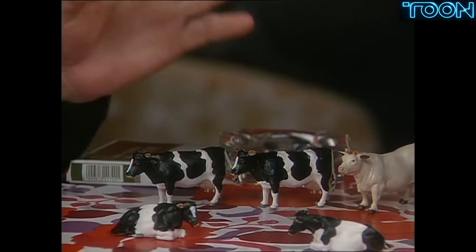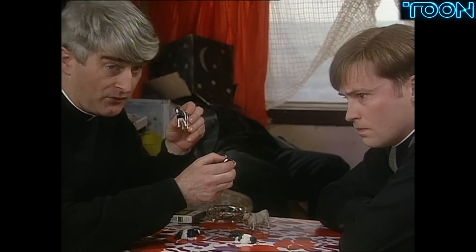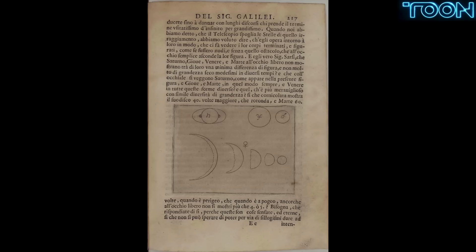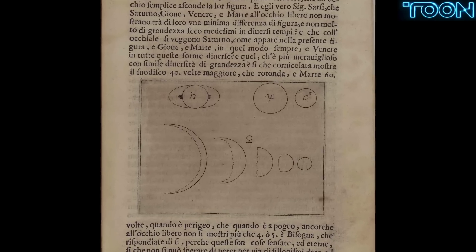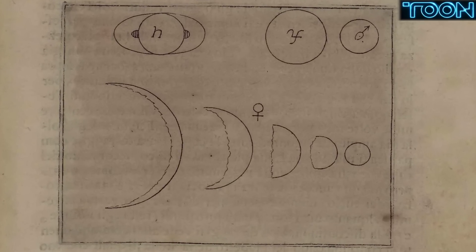Galileo similarly said geocentrism didn't make sense, and he identified some very specific evidence — like the phases of Venus. The phases of Venus coincided with how large Venus appeared to us. As we know from perspective, things that are close appear larger, and things that are far appear smaller. He sketched out in his journal — page 217 of the book — the phases and the size of Venus that he observed.